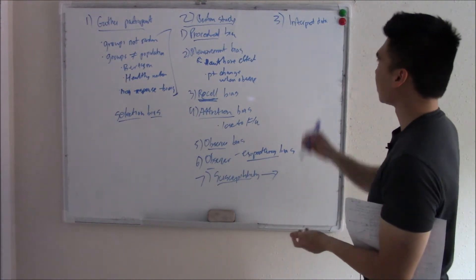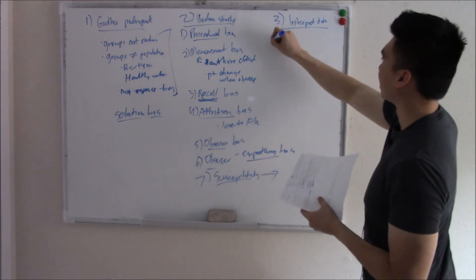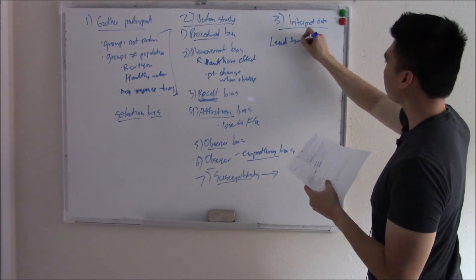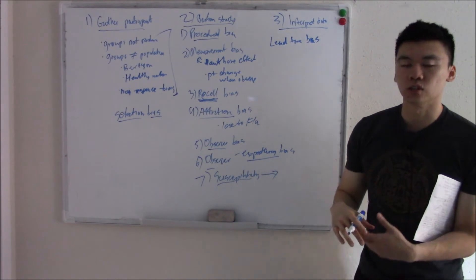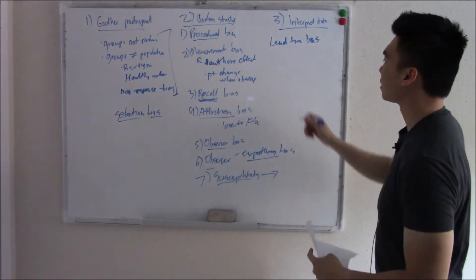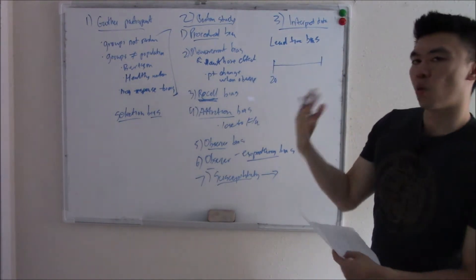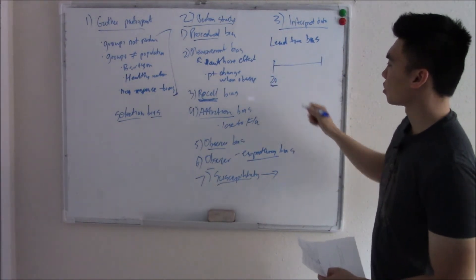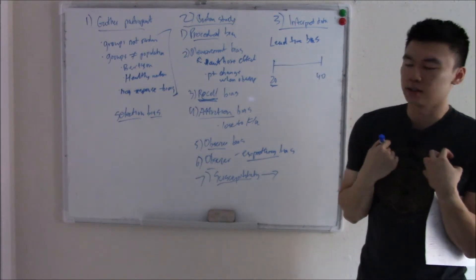That's biases that can occur when you perform a study. How about biases that can occur when you interpret data? You can have something called lead time bias, where early detection of a disease is confused with increased survival. What the heck does that even mean? Let's say you have a disease that, without fail, kills people within 20 years. So if you get the disease when you're 20, without fail, you will die when you're 40.